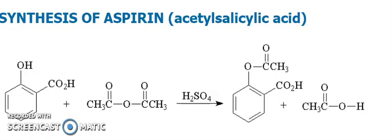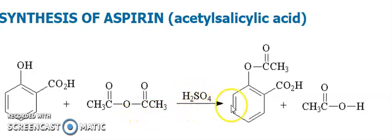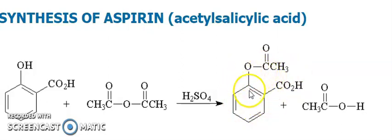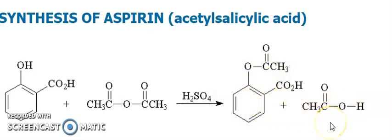Let us start — how you will synthesize aspirin from salicylic acid. You can see this molecule. This is acetic anhydride, sulfuric acid, and this is the salicylic acid. Acetylated salicylic acid — this is aspirin — and you also have acetic acid.